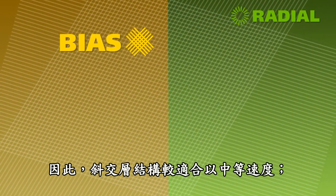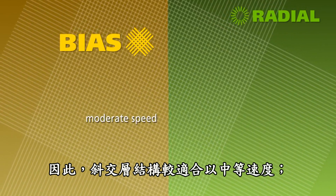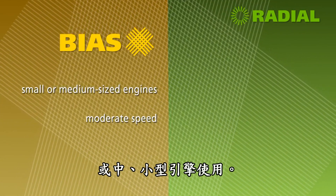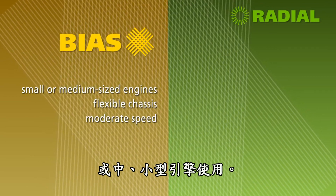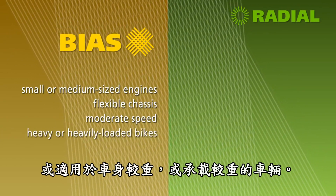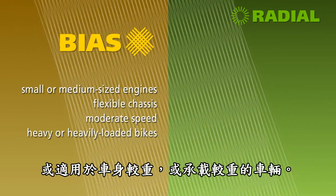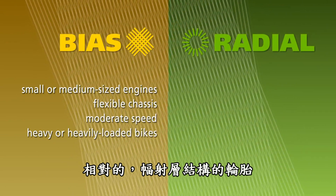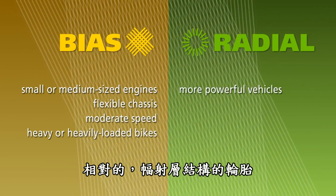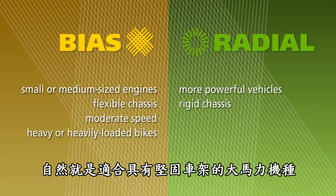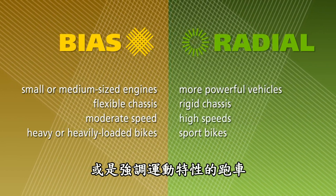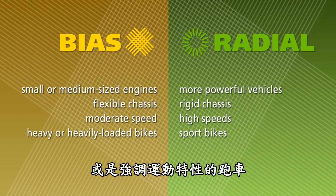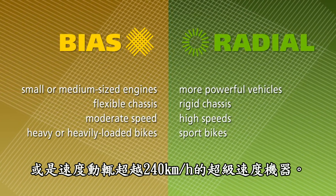As we have seen, the bias structure is suitable for vehicles travelling at a moderate speed, with small or medium sized engines and a reasonably flexible chassis. It is also suitable for heavy or heavily loaded bikes. The radial structure becomes a necessity for more powerful vehicles with an extremely rigid chassis, and ones used for sport. It enables speeds in excess of 150 miles per hour to be reached.